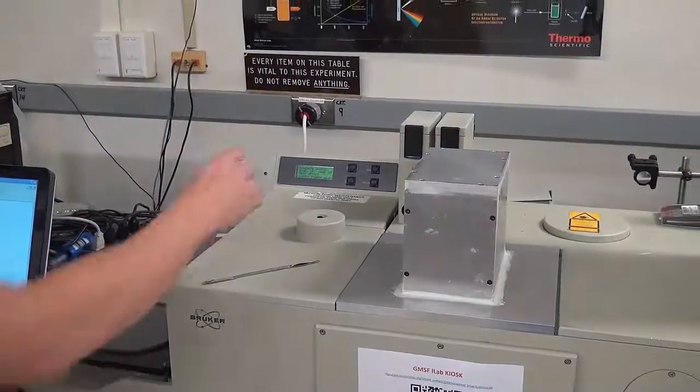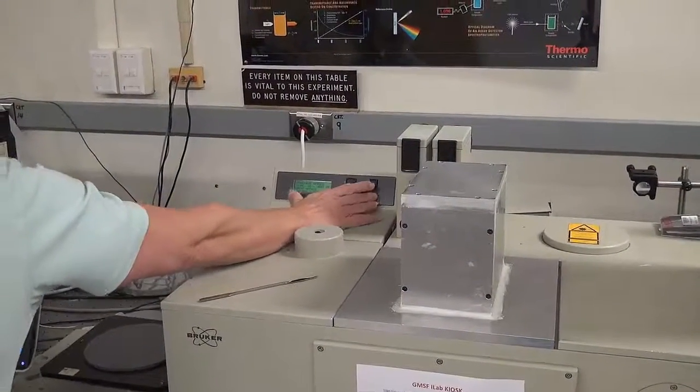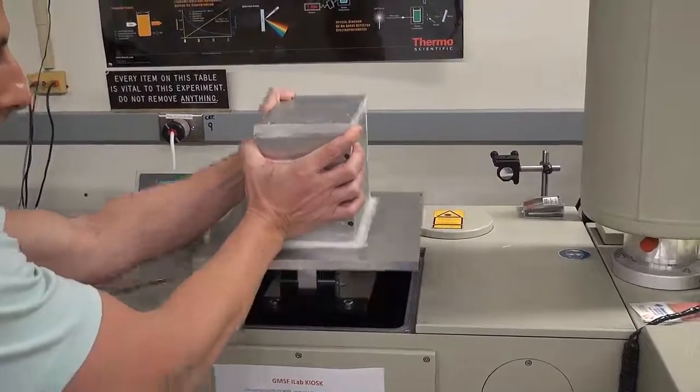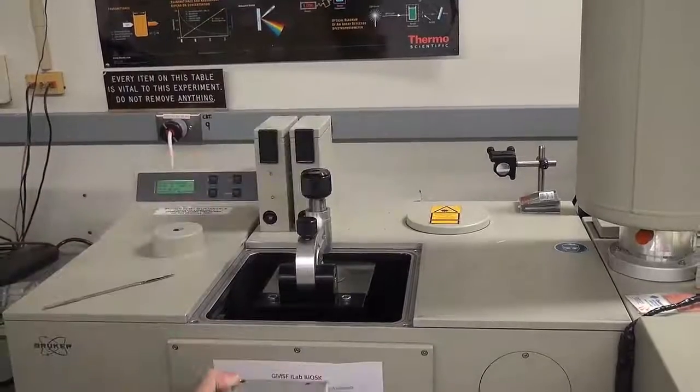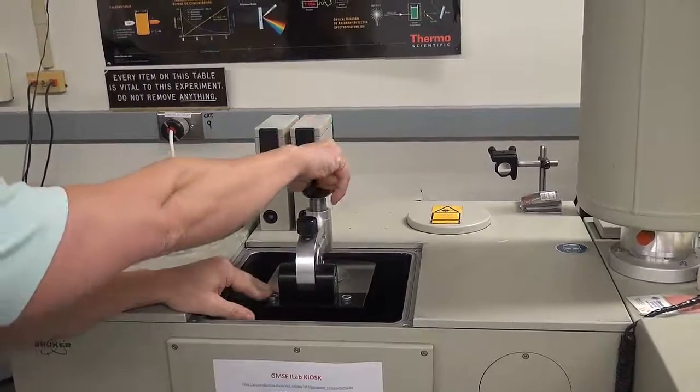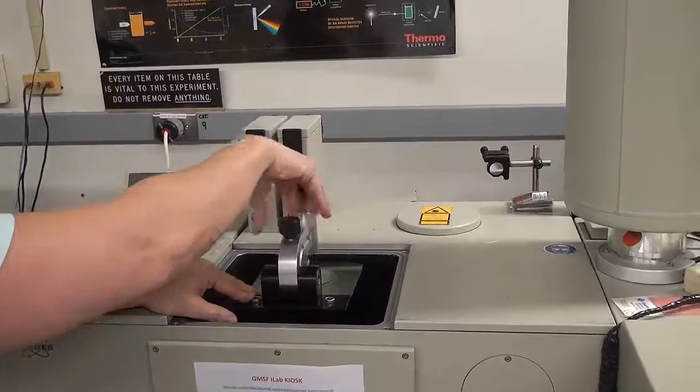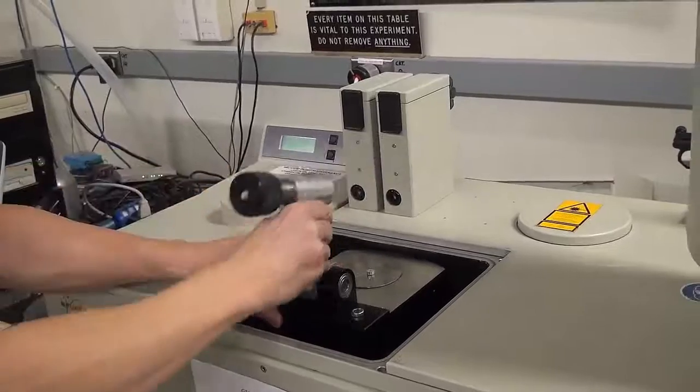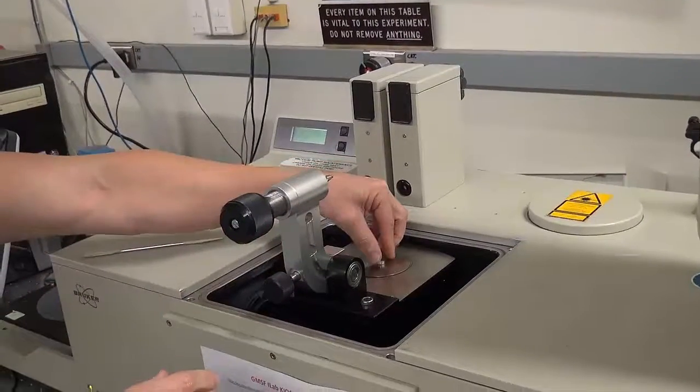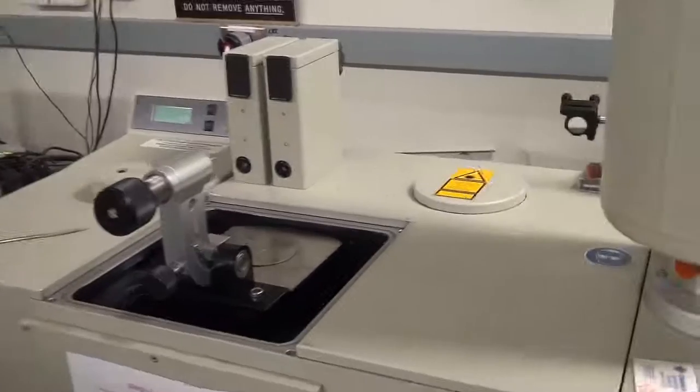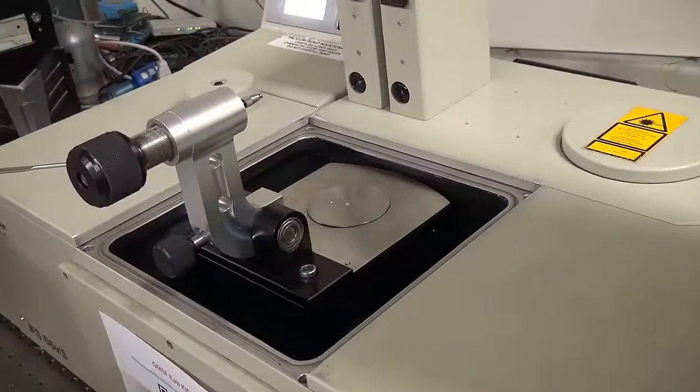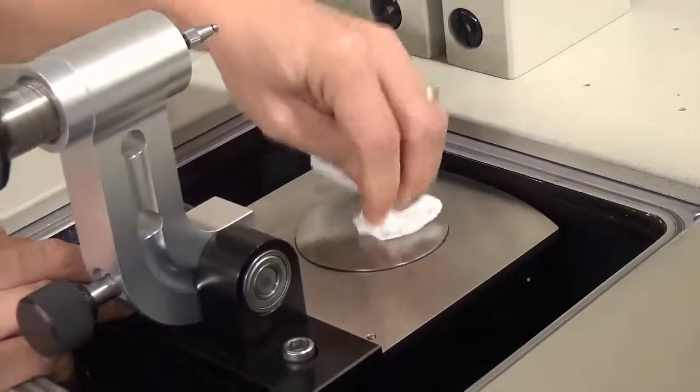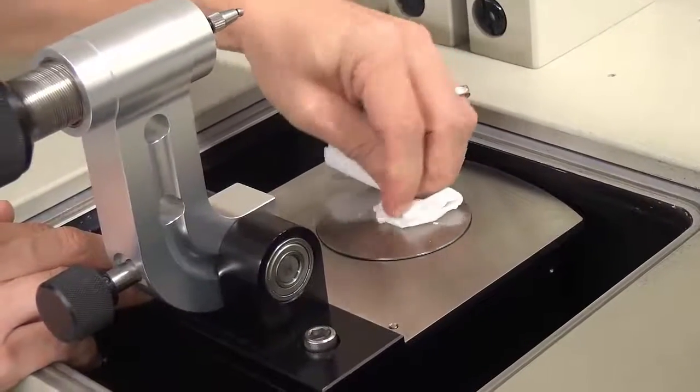So to switch your samples, vent the optics, remove the lid, loosen the big knob on the arm, then the small one, and then lift the arm while holding down the ATR. You can grab the puck and clean off the sample. The sample might stick to the diamond, so you can use chem wipes to clean it carefully, though most samples won't stick.